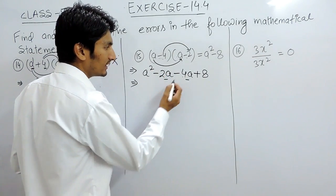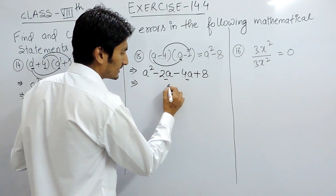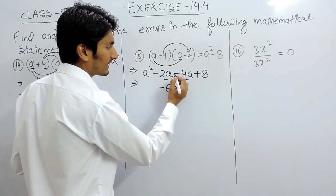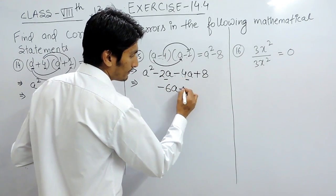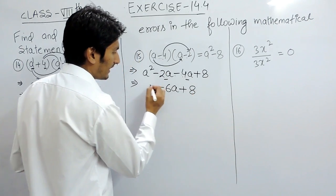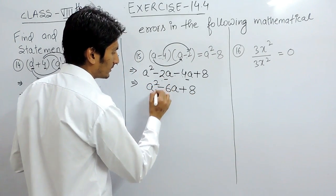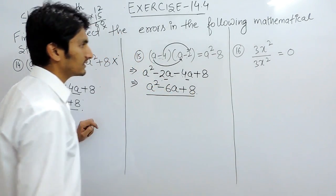Minus plus minus is minus. So 4 plus 2 is 6a with negative sign, because greater value has negative sign. Plus 8, and a square. So this is the correct answer here.